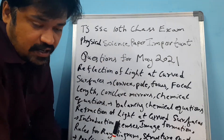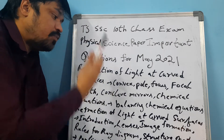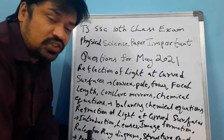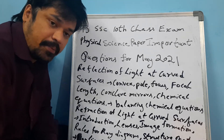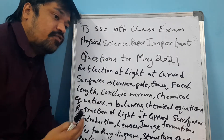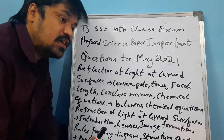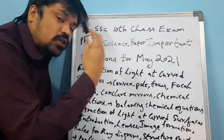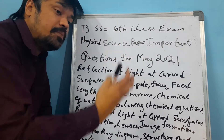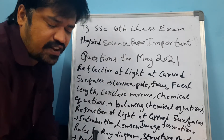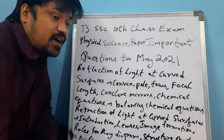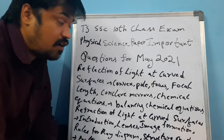Let us discuss some of the important topics in this physical science paper. Some of the most important topics — each and every student should first try to understand the concept, try to understand the meaning of the question and the meaning of the answer. If you understand the meaning of the question, it will be very easy for every student to get very good marks — above 90 marks — in the public exams of May 2021.